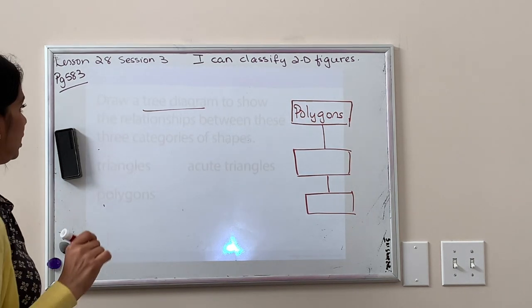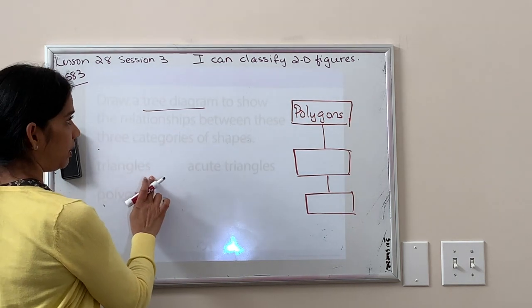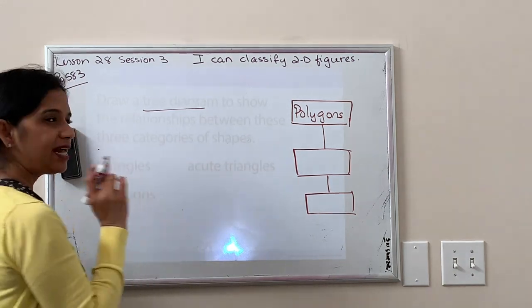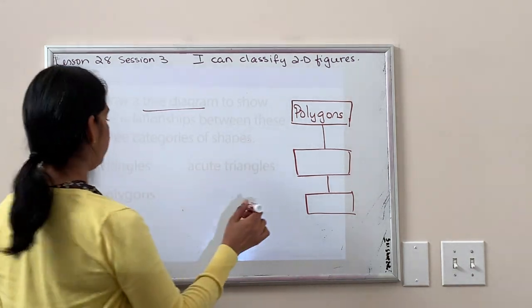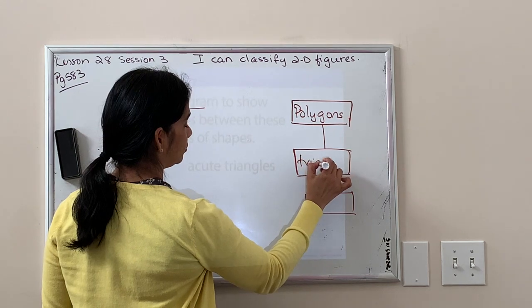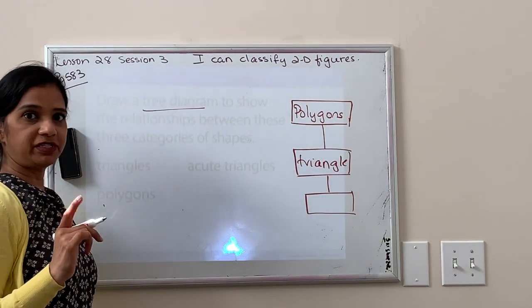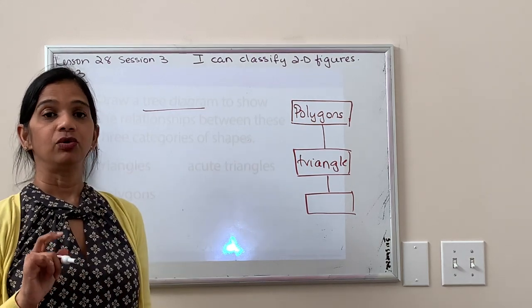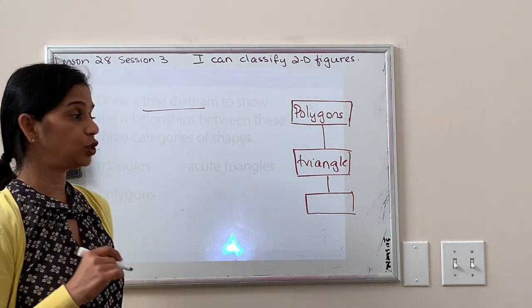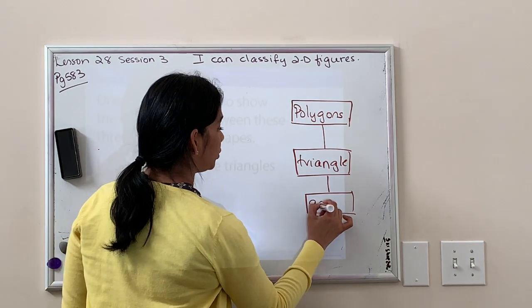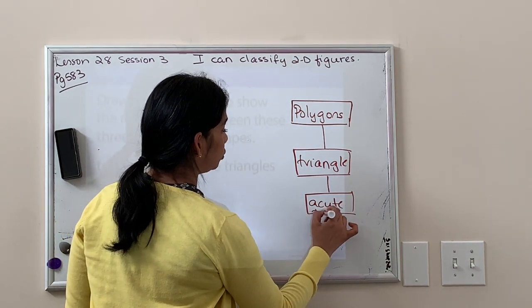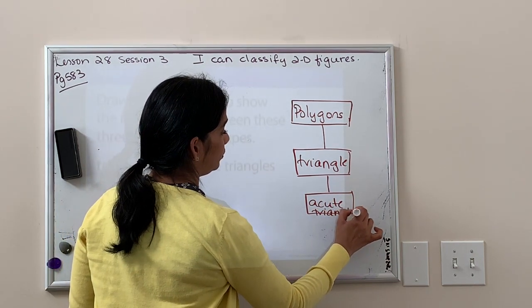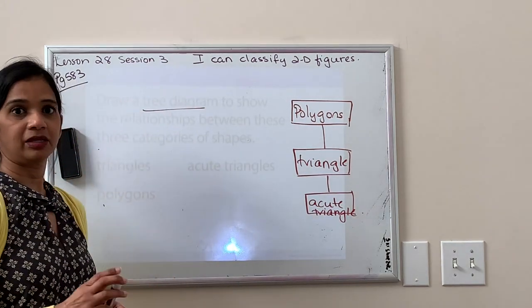Then my second shape I'm going to put under there, my next most specific shape, would be a triangle. And then even more specific is an acute triangle. Do you know what an acute triangle is? The sides are less than 90 degrees. So we're going to do acute triangle right there. All right?